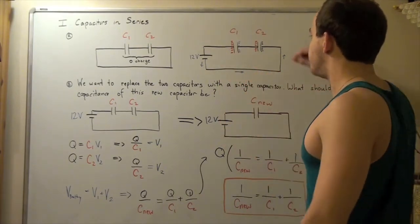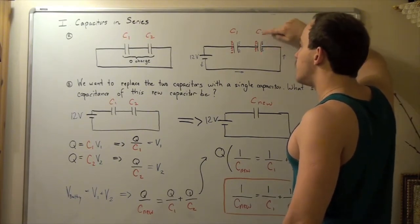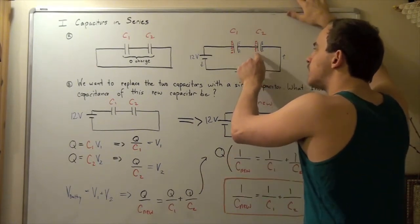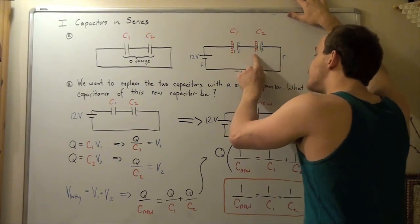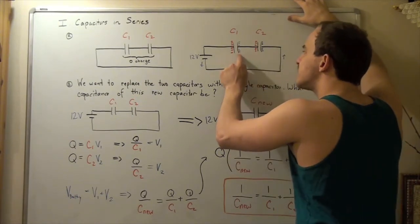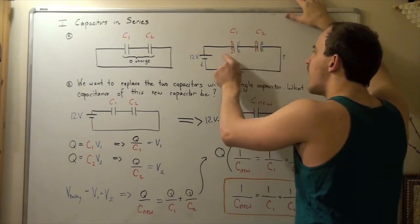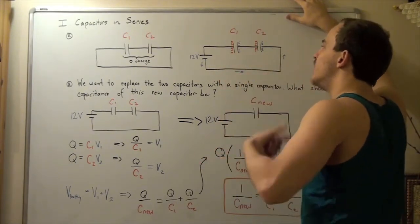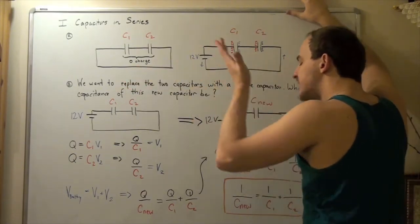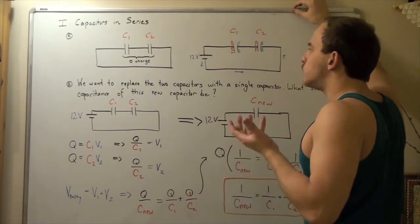Let's see what happens on capacitor number two. On one end we have a charge buildup of negative q, and the magnitude of the charge buildup on the opposite plate is exactly the same — so one plate is negative q and the other is positive q. Similarly for capacitor one, if one side is positive q, the other must be negative q. Adding all the charges together: positive q minus q plus positive q minus q gives us a net charge of zero, confirming that conservation of charge holds.